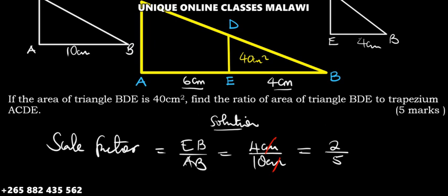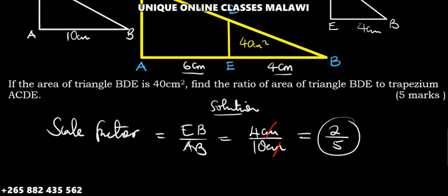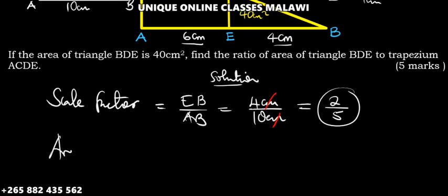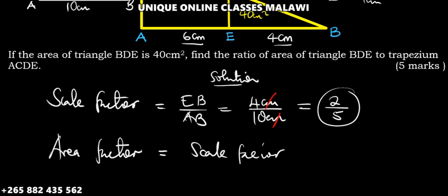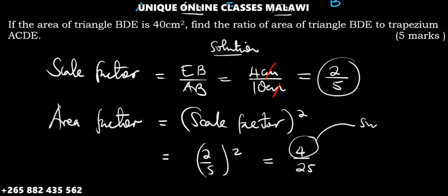Now we need to find the ratio of the areas. We can find the area factor using the scale factor. The relationship is: area factor equals scale factor squared. So the scale factor 2/5, when squared, gives us 4/25. This is the ratio of the small triangle to the bigger triangle.